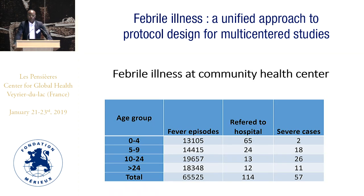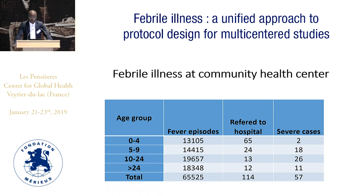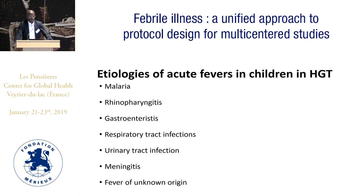At the community health center level, here is one example of a main community health center in the Bamako peri-urban area. There are fever episodes totaling 65,000 cases of fever yearly. The distribution according to age group is shown here, and some cases were referred to hospital — the last column shows the severe fever cases referred to hospital. The etiologies of acute fever in children in the hospital laboratory were malaria, pharyngitis, gastroenteritis, respiratory tract infection, urinary tract infection, meningitis, and some fever of unknown origin.